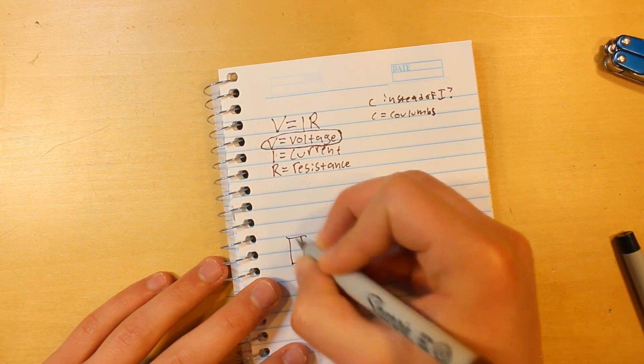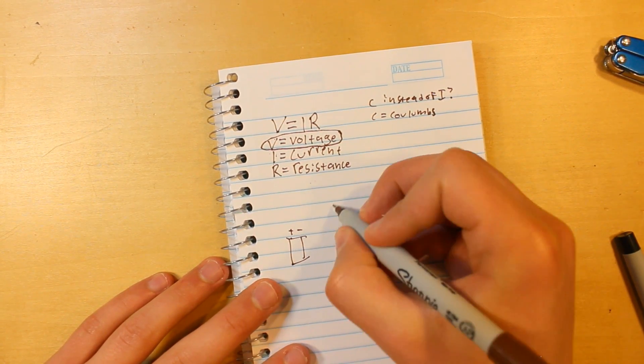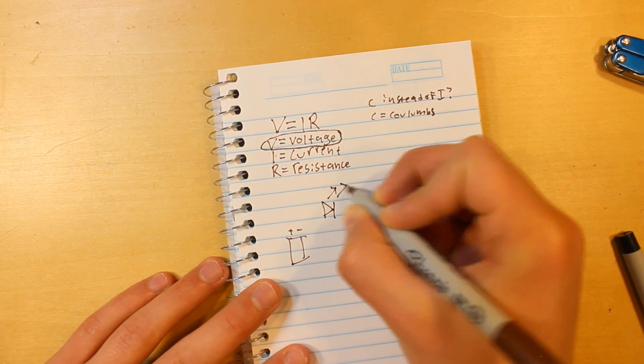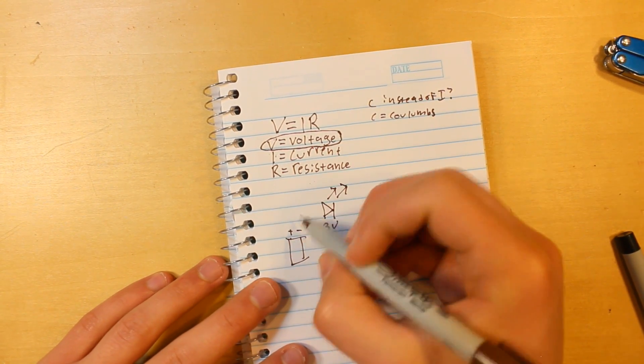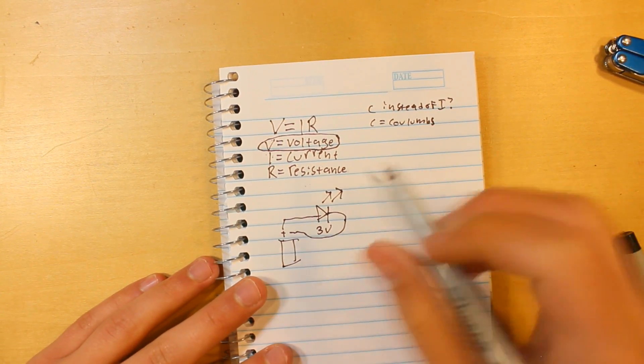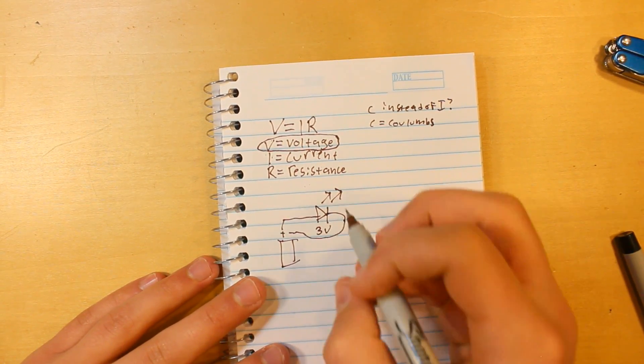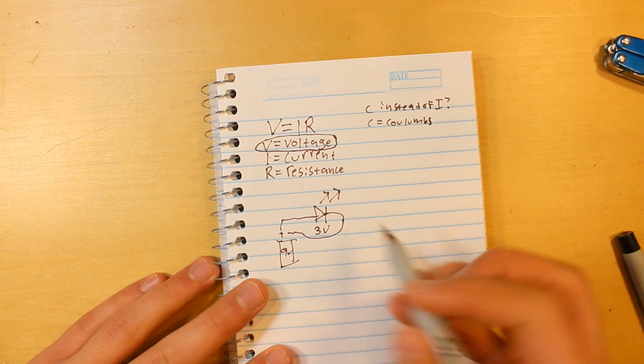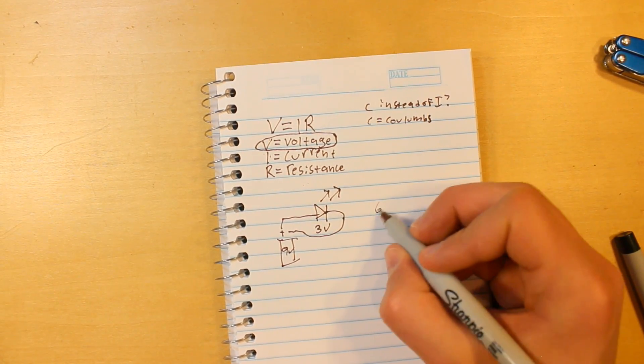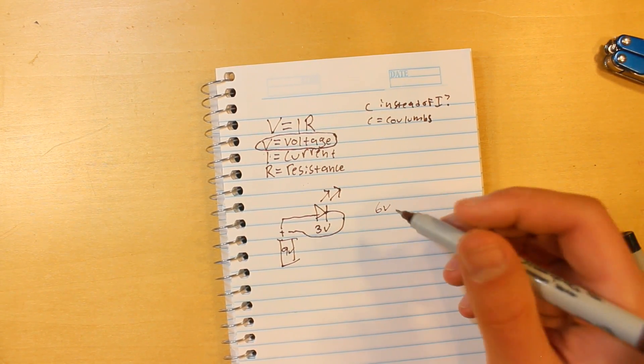So say we have a 9 volt battery with a plus and minus lead, and then we have an LED which takes 3 volts, which is pretty standard. So this LED is connected like that. This is a 3 volt LED on a 9 volt power supply. The voltage drop across the LED is 3 volts, so we have 6 volts left over, because 9 minus 3 is 6.